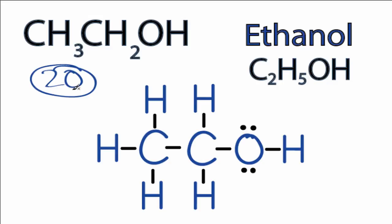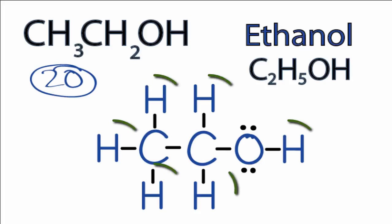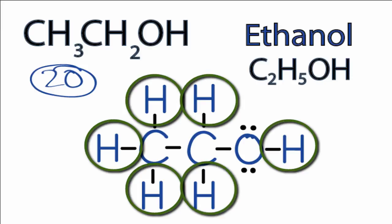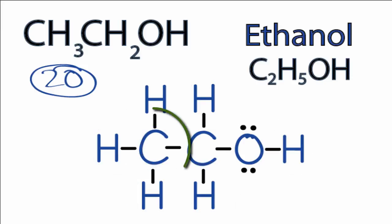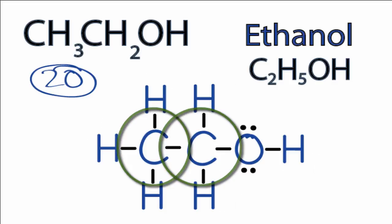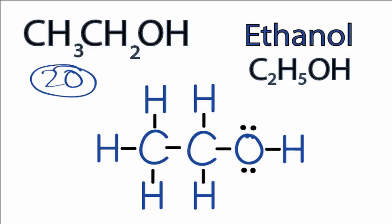So at this point we've used all 20 valence electrons for the CH3CH2OH Lewis structure. Each of the hydrogen atoms has two valence electrons, so its outer shell is full. The carbons have eight, their outer shell is full, and the oxygen as well — it has eight valence electrons, so it has an octet.